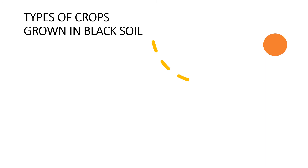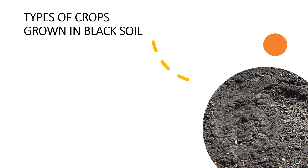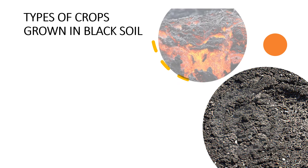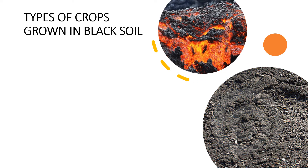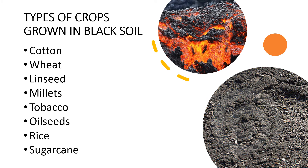Black soil is found in the central and northwestern parts of the southern plateau. Most of Maharashtra, Madhya Pradesh and parts of Telangana, Andhra Pradesh, Gujarat, Karnataka and Rajasthan have this soil. Black soil is formed from the lava that comes out of volcanoes. This type of soil is suitable for growing cotton, wheat, linseed, millets, tobacco, oil seeds, rice and sugarcane.